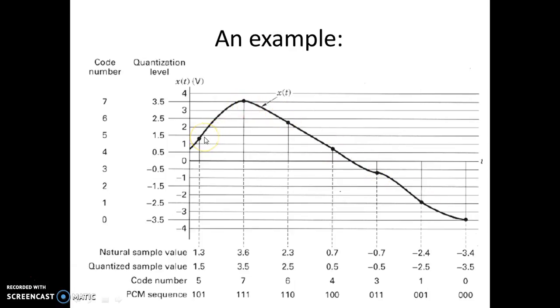So what we do is we take the value of the signal at that point. Here the sample value is around 1.3. If the sample value is between 1 and 2, I quantize it into a particular level 1.5. So the quantized sample value is 1.5.